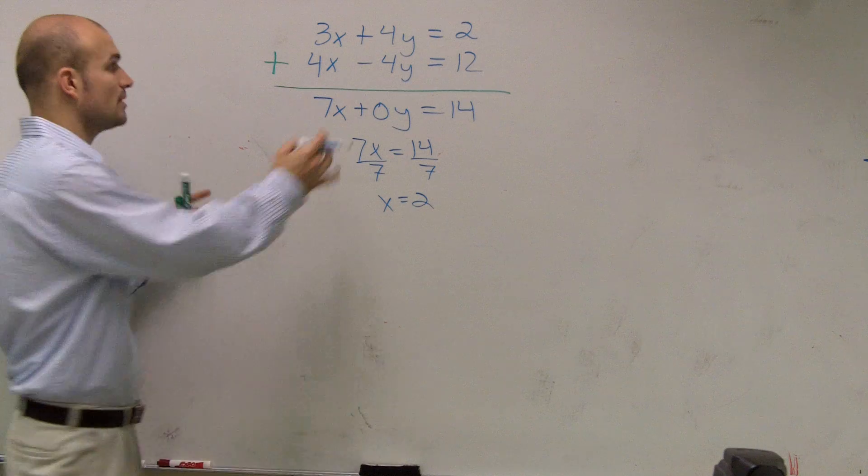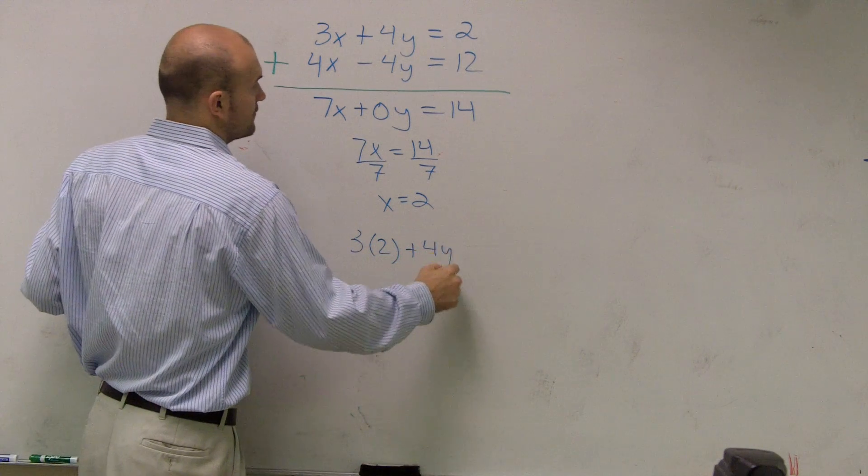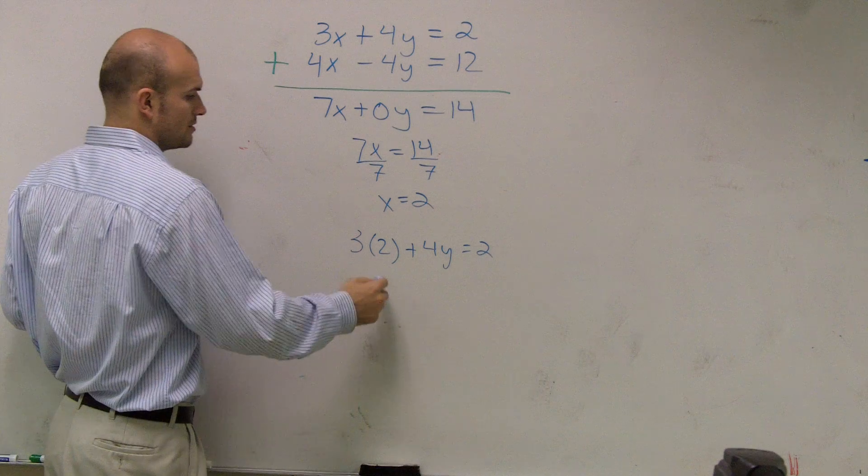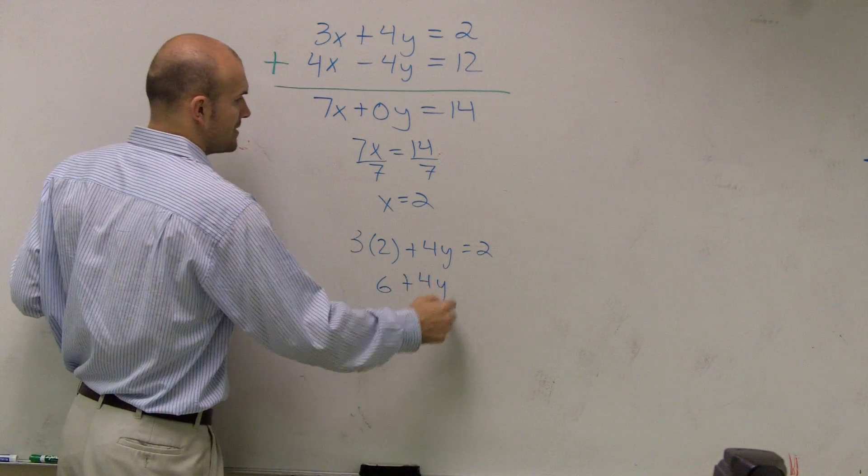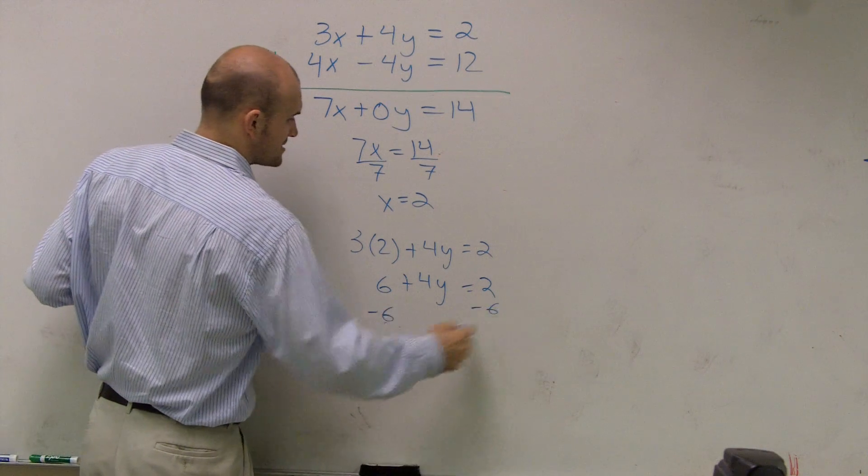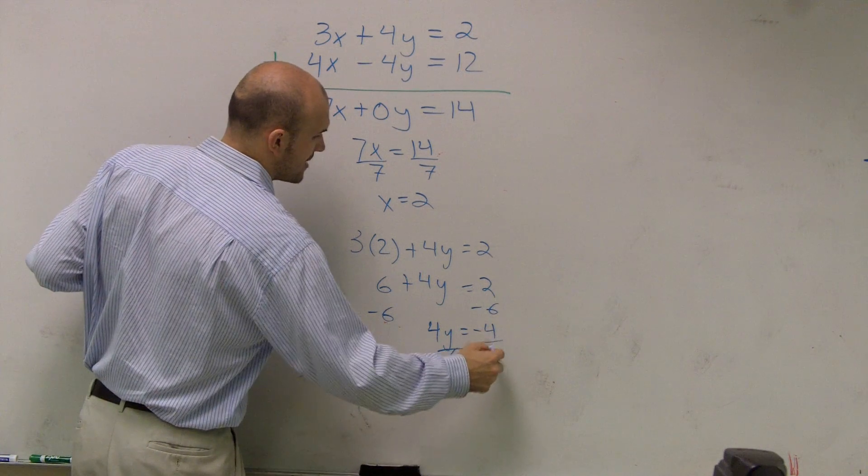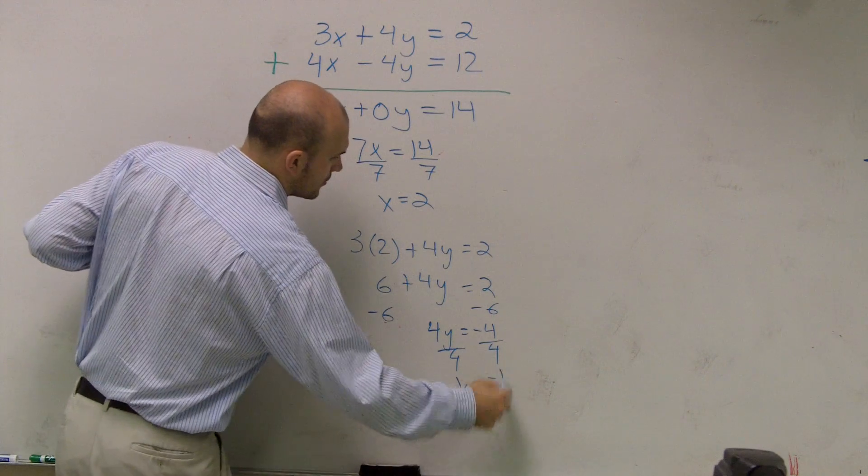Then once we know the value of x, we plug that back in. So we have 3 times 2 plus 4y equals 2. 6 plus 4y equals 2. Minus 6 minus 6. 4y equals negative 4. Divide by 4. y equals negative 1.